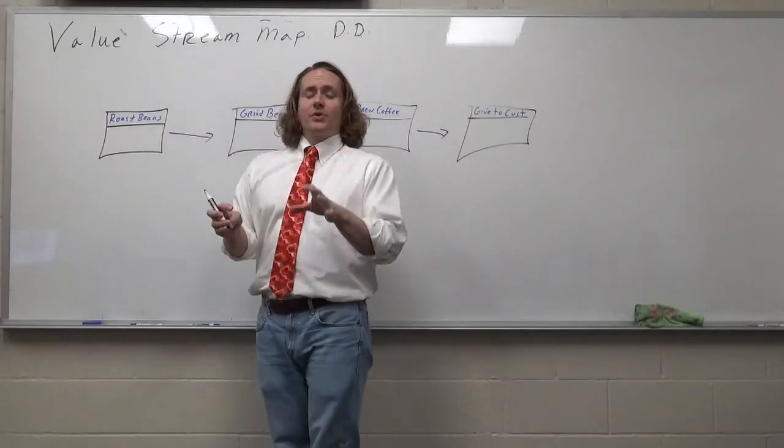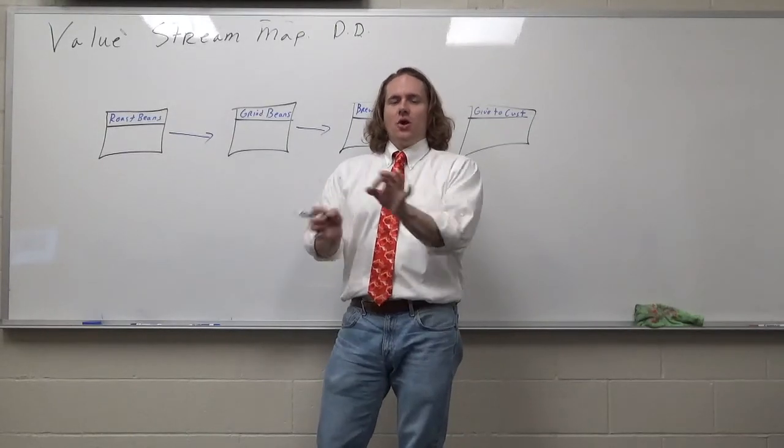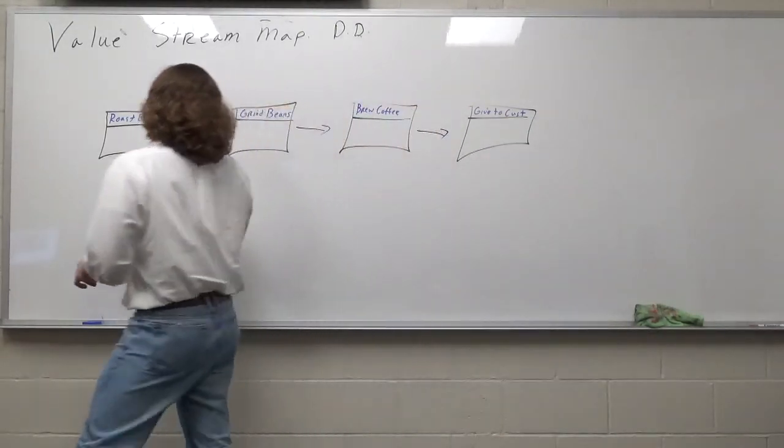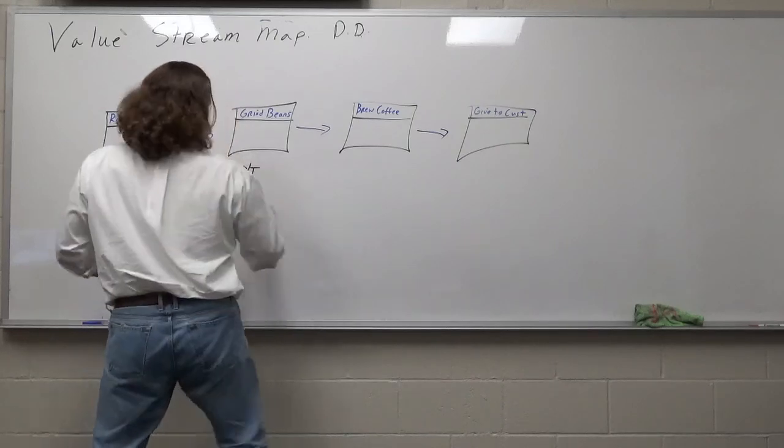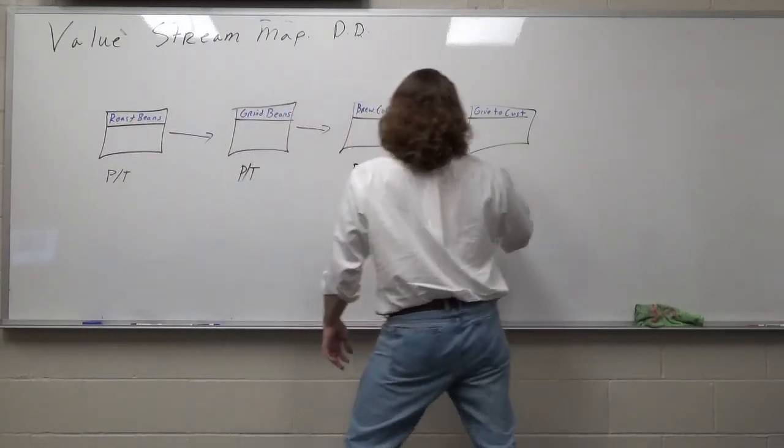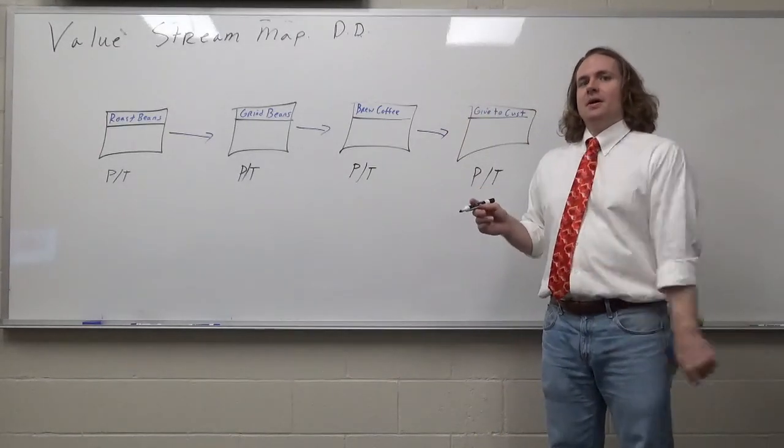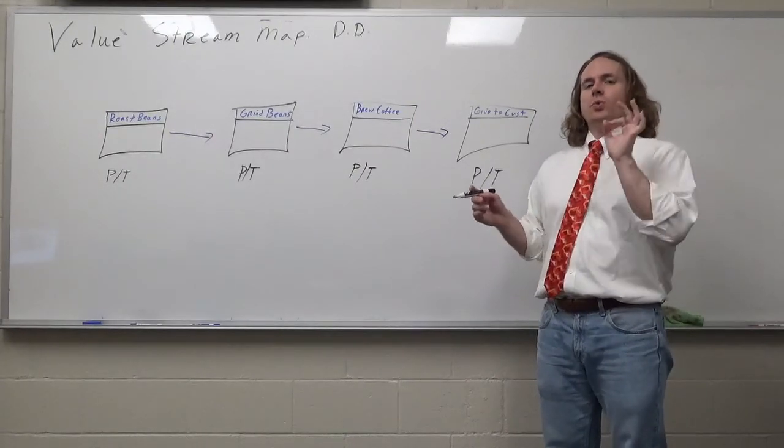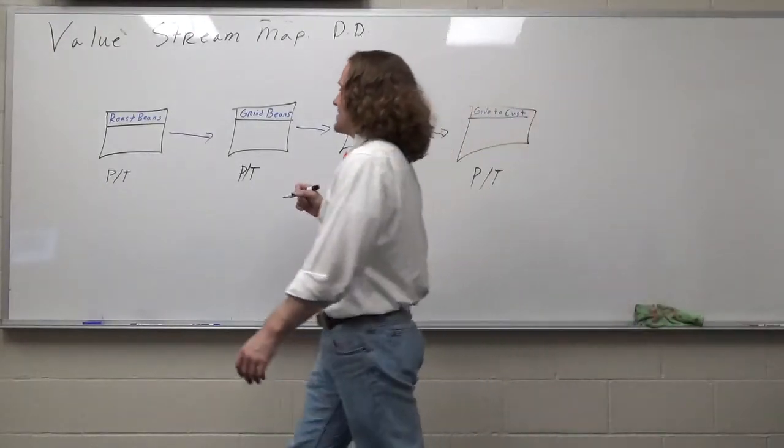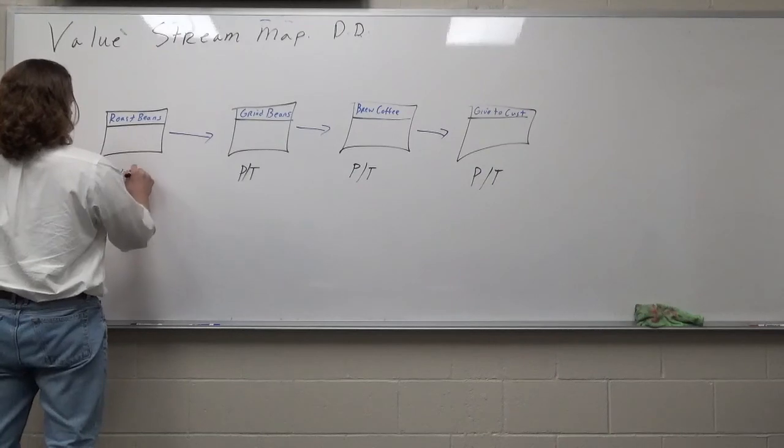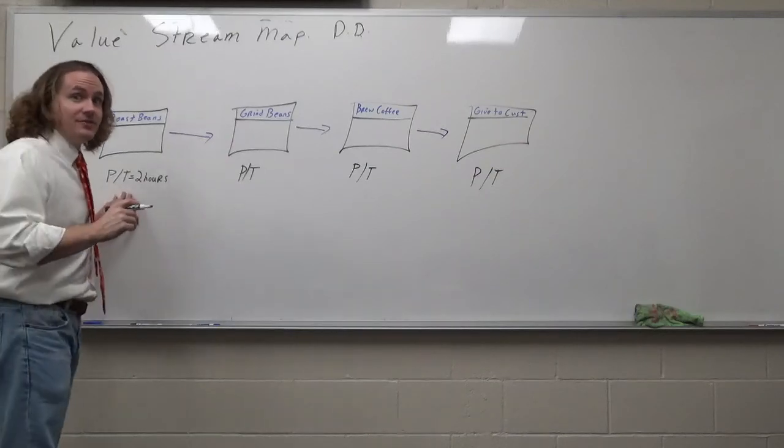The first one is P over T. All P over T means is how long does it take you to do one iteration of whatever you're talking about. So let's put PT beneath roast beans, PT beneath grind beans, PT beneath brew coffee, PT beneath give to customer. Let me ask you, how long does it take for you to roast one batch of beans? Let's say that it happens to take actually two hours to roast a batch of beans. Therefore, my PT is two hours. That's all I've done.